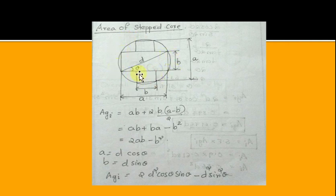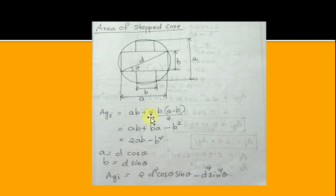Area of Stepped Core: From the figure, the area of the stepped core is the area of the bigger stamping plus the area of two identical small stampings. Area of bigger stamping is a × B. Area of each small stamping is B × (a − B) / 2. With two small stampings, total gives A_GIS = 2aB − B².